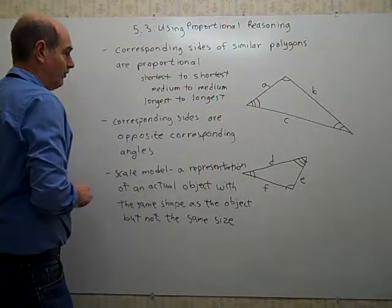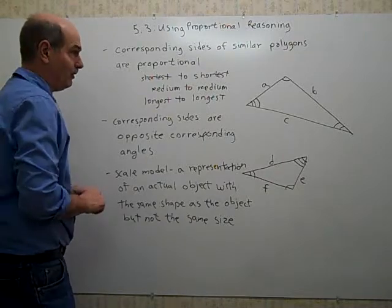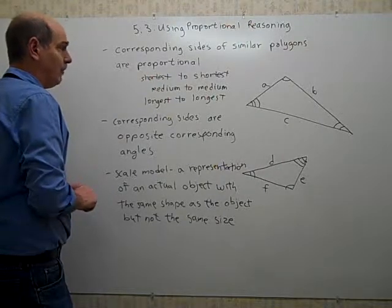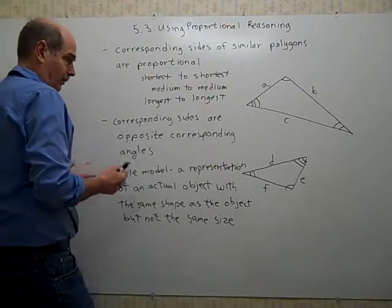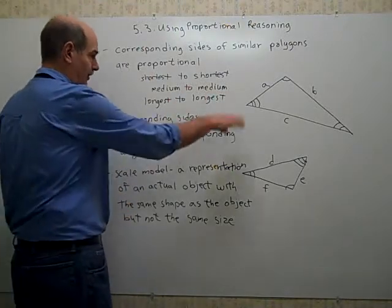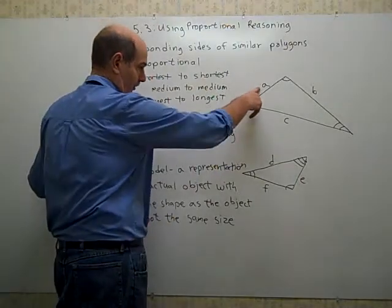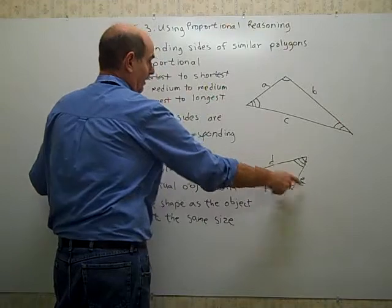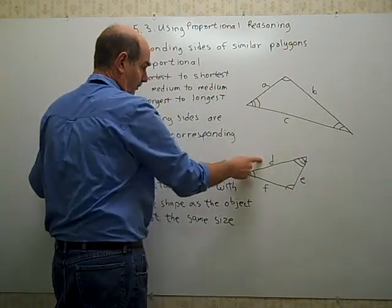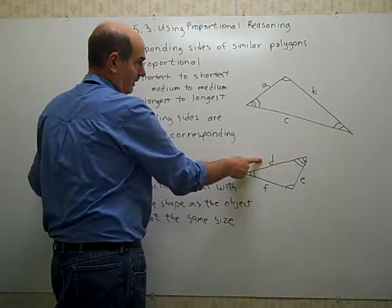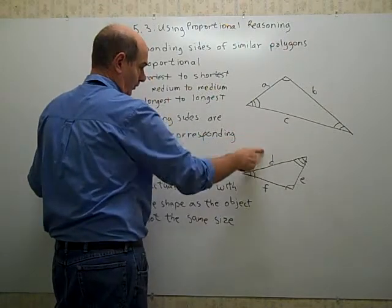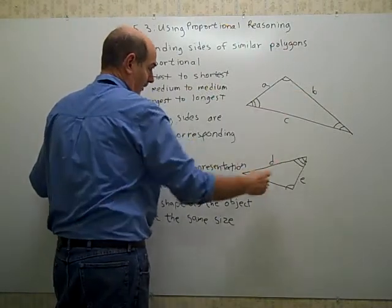Corresponding sides are sides that are in the same relative position on a polygon. Always the shortest sides of, if the two triangles are similar, then their shortest sides correspond. So, A is the shortest side in this triangle, it would correspond to E. B is the longest side, it would correspond to D. Actually, C is the longest side, it corresponds to D. C and D correspond, leaving B and F to correspond.